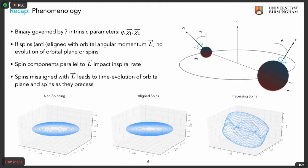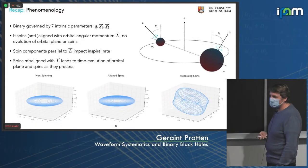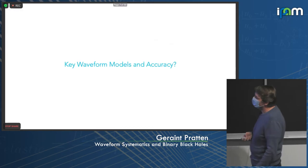The other case is where you allow the spins to be misaligned with the orbital angular momentum, and then you get relativistic spin-orbit couplings that induce a precession of the orbital plane and the spins themselves. The morphology becomes much more dramatic and much more complicated to model.